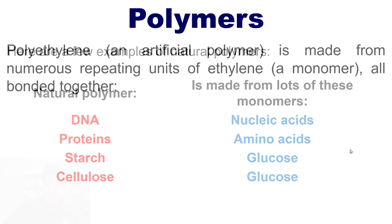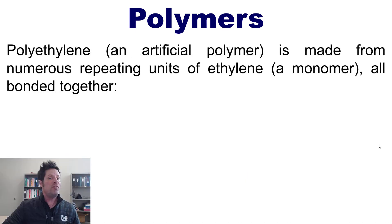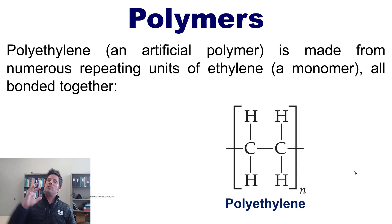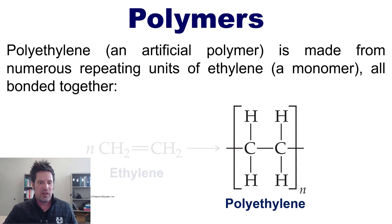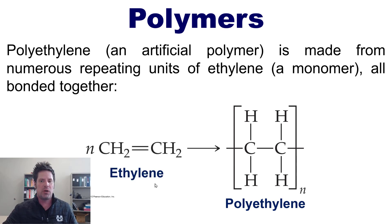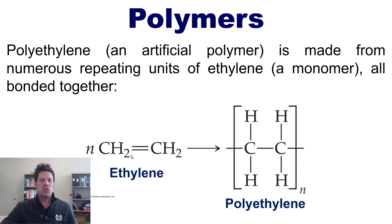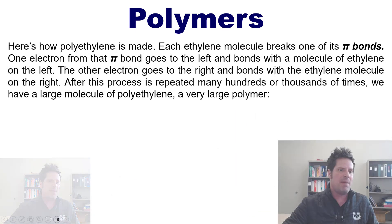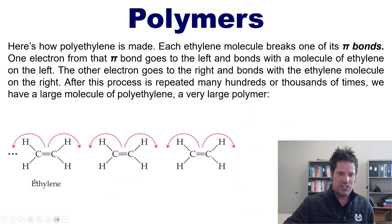Polyethylene, which is an artificial or human-made polymer whose structure is represented here, is made from numerous repeating units of ethylene — shown here as the monomer — all bonded together. So you get a bunch of ethylene together, stir them in a pot, they polymerize, and they form polyethylene.